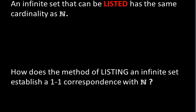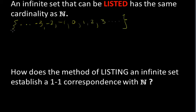Let's review how we decide if a set has the same cardinality as the set of natural numbers. We said that an infinite set that can be listed — put on a list — has the same cardinality as N. For example, the integers. We could write them as ...minus 3, minus 2, minus 1, 0, 1, 2, 3... That's the set of integers.